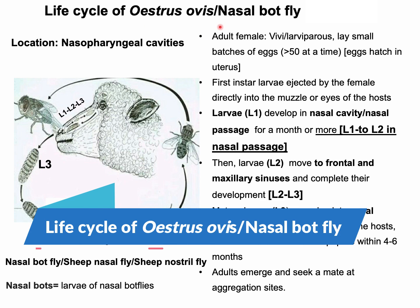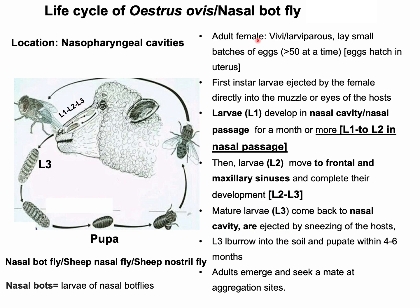Life cycle of Oestrus ovis: The female is viviparous and can deposit more than 500 larvae. Larvae develop in the uterus. The female fly squirts a jet of liquid containing first-instar larvae directly onto the nostrils or eyes of the host. More than 25 larvae can be delivered at a time, and a newly deposited larva is around one millimeter in length.